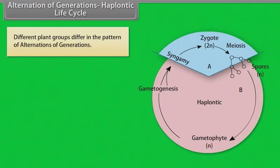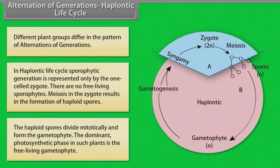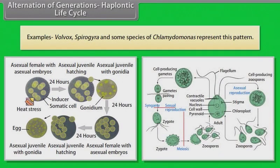Alternation of Generations - Haplontic Life Cycle: Different plant groups differ in pattern of alternation of generations. In haplontic life cycle, sporophytic generation is represented only by the one-celled zygote. There are no free-living sporophytes. Meiosis in zygote results in the formation of haploid spores. The haploid spores divide mitotically and form the gametophyte. The dominant photosynthetic phase in such plants is the free-living gametophyte. Examples include Volvox, Spirogyra and some species of Chlamydomonas.